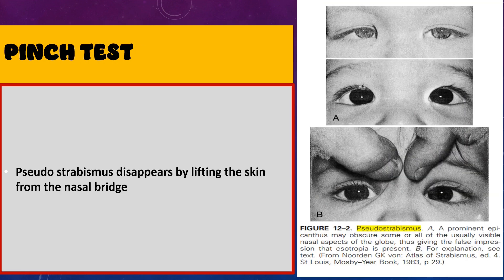A very common test employed to differentiate between true esotropia and pseudoesotropia is the pinch test. In the pinch test, we pinch the skin at the nasal bridge, as seen in this picture. If we are dealing with true esotropia, the esotropia is still very apparent. However, if dealing with pseudoesotropia, as we lift the skin from the bridge of the nose, the epicanthus gets stretched and lifted off the inner canthus, the sclera becomes visible, and the eyes will look straight ahead.